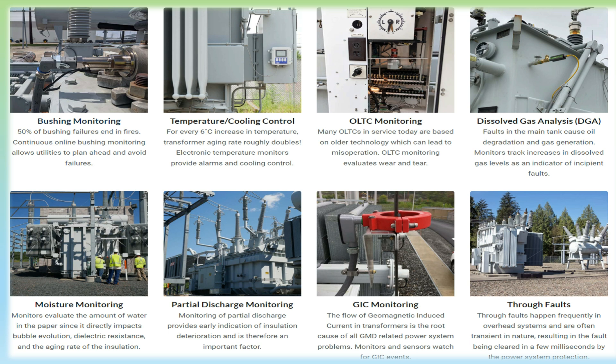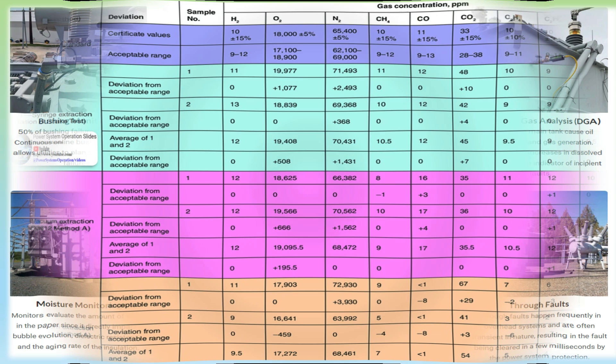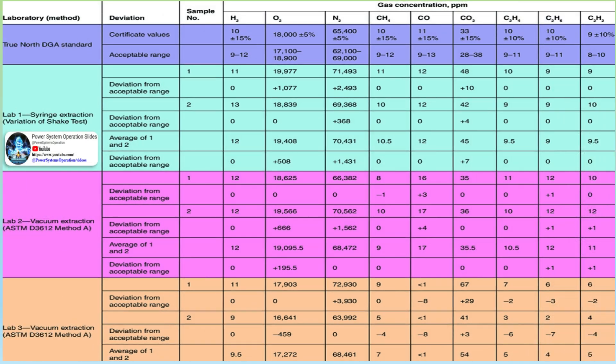Regarding the advantages and disadvantages of key gas monitoring: hydrogen gas alone doesn't provide enough data to perform a diagnosis as to the type of fault occurring. But it is effective at providing an early indication of incipient faults, thereby reducing the chances of a transformer failing without some advance warning, allowing for better management of assets. Key gas monitoring, when used in conjunction with a good maintenance program consisting of routine DGA sampling and electrical testing, offers a dependable, cost-effective alternative to multi-gas monitoring.